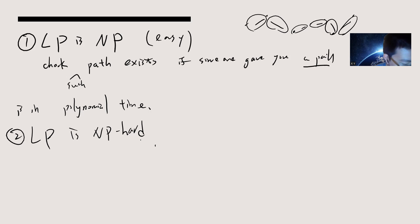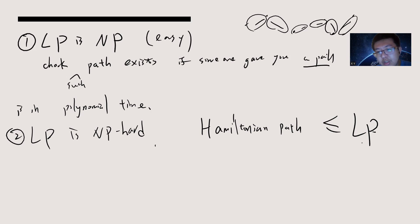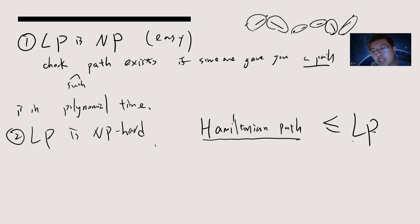My claim is the following: we want to say that Hamiltonian Path reduces to LP. Basically this means that if someone gives you a problem instance asking about the Hamiltonian Path, then you can make a reduction that becomes another instance of Longest Path, and if that instance says yes then there is a Hamiltonian Path, and if there is no Hamiltonian Path then there is no. This is the standard reduction.